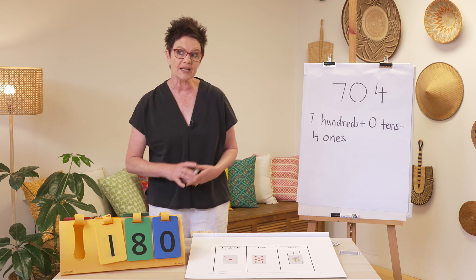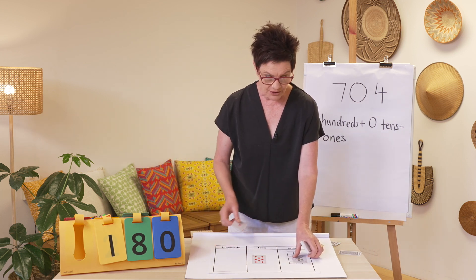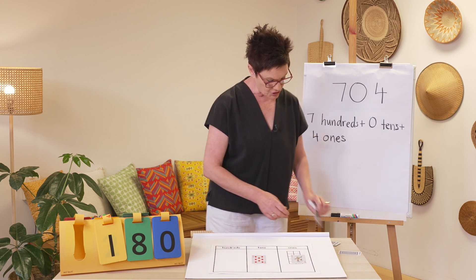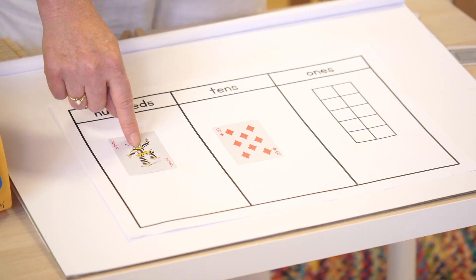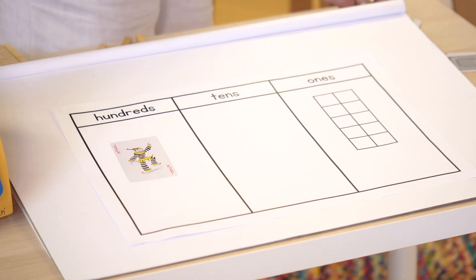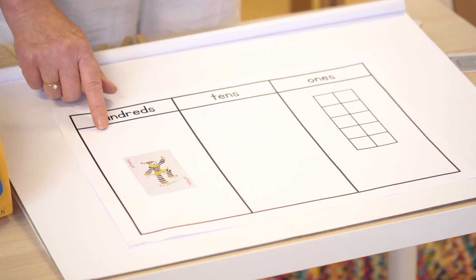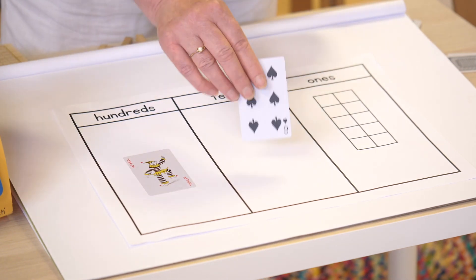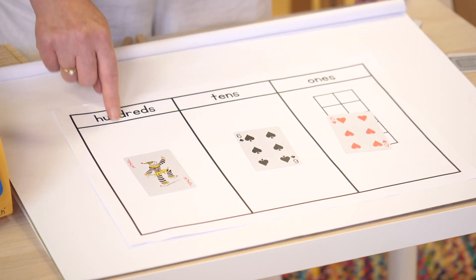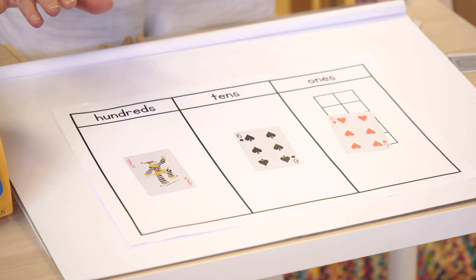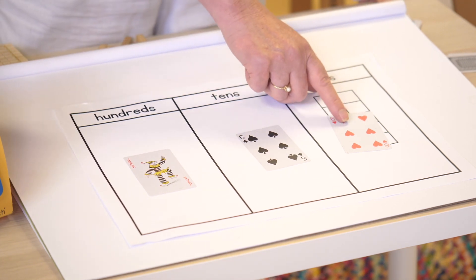I just want to show you that I can place my joker in the hundreds if I want to. Let's deal two more cards. Now I have a zero in my hundreds — zero hundreds, none of these — six tens and six ones.